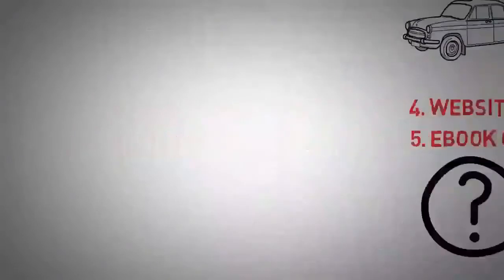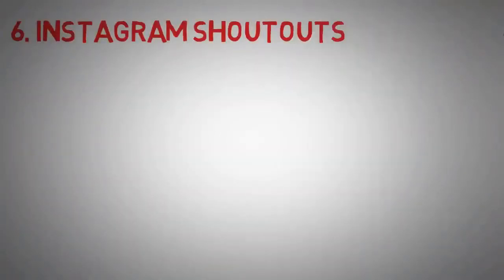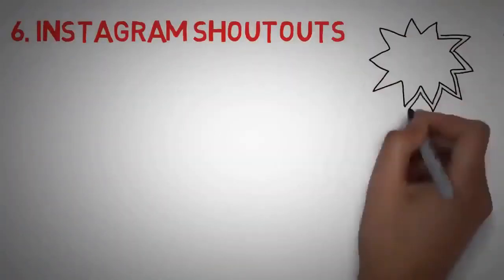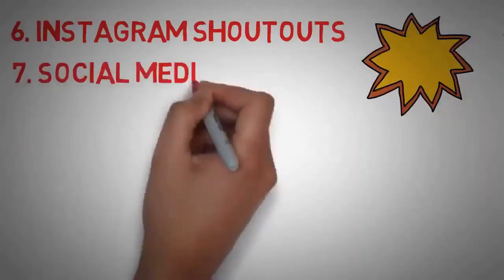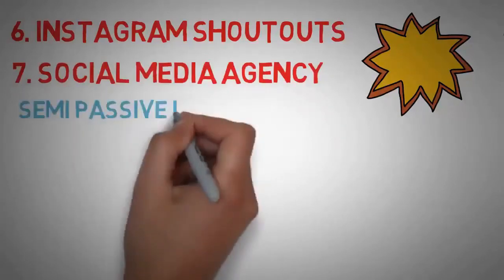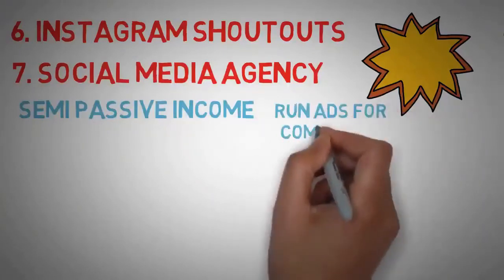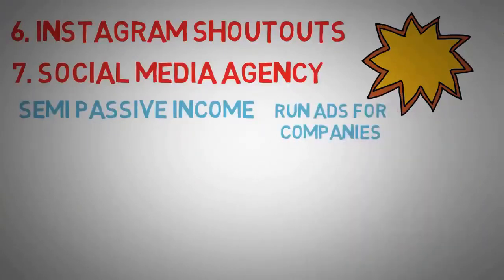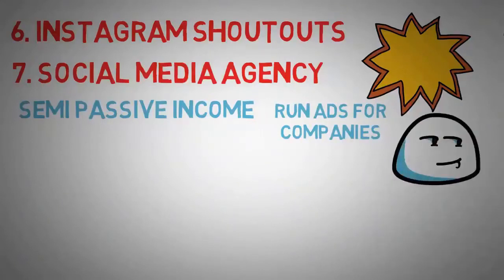Number six is Instagram shoutouts, and we mentioned this before and there's actually a lot more to it, so I recommend you watching that video in the playlist. Number seven is a social media agency. Now this is semi passive because you still have to produce content for other companies, but basically you do Facebook ads for local companies. As long as you know how to do it right, you can become a Tai Lopez minion and sign up for his course. Now I dog on him, but he really does have a lot of great advice. Just not everyone will be able to become a social media agency gazillionaire.